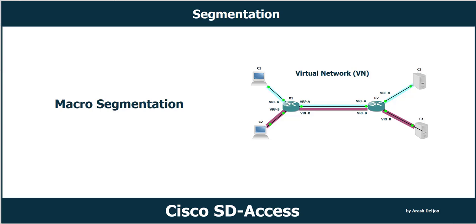In this video I'm going to explain about segmentation in traditional networks and also segmentation in Cisco SD-Access. This is one of the most important topics in Cisco SDA. I will explain two types of segmentation: macro segmentation and micro segmentation. You will hear about these two types in the Cisco SD-Access course and other courses, so you should understand the difference between them.